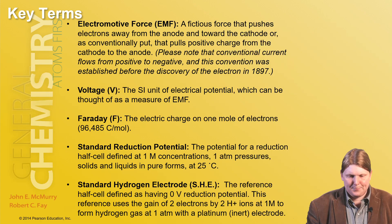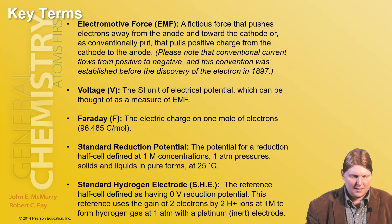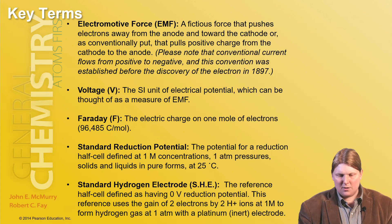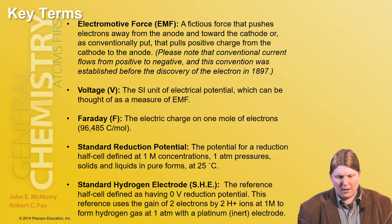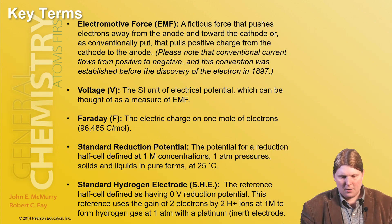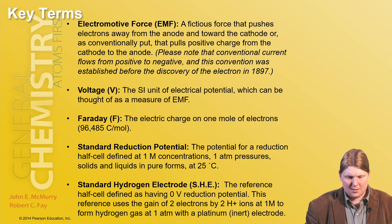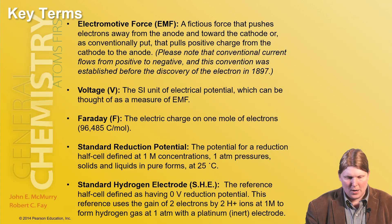The Faraday constant is the electric charge on one mole of electrons: 96,485 coulombs per mole. We'll use that as a conversion factor in a few places. The standard reduction potential is the potential for the reduction of a half cell under standard state — defined as one molar concentration, one atmosphere pressure, solids and liquids in pure forms, and at 25 degrees Celsius.